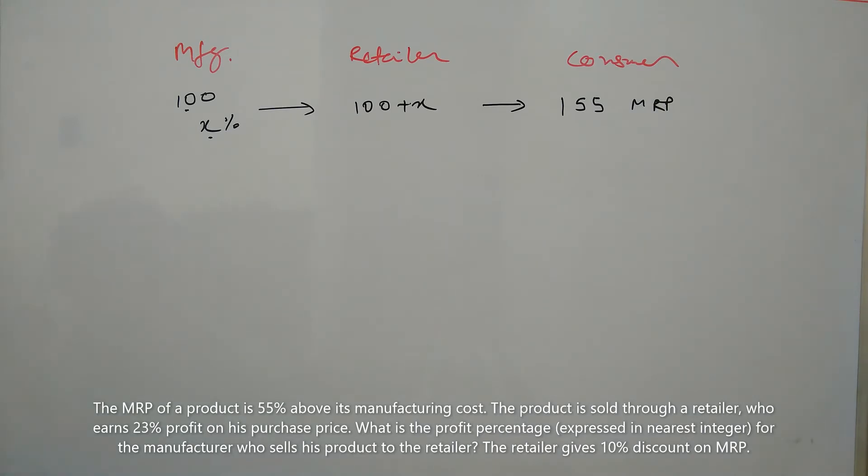When the retailer is selling this product to consumer, he is giving the consumer 10% discount on MRP. So in that case, the consumer is buying this product at 90% of 155, which is 9 by 10 times 155. This is the buying price for consumer, applying 10% discount on the MRP.